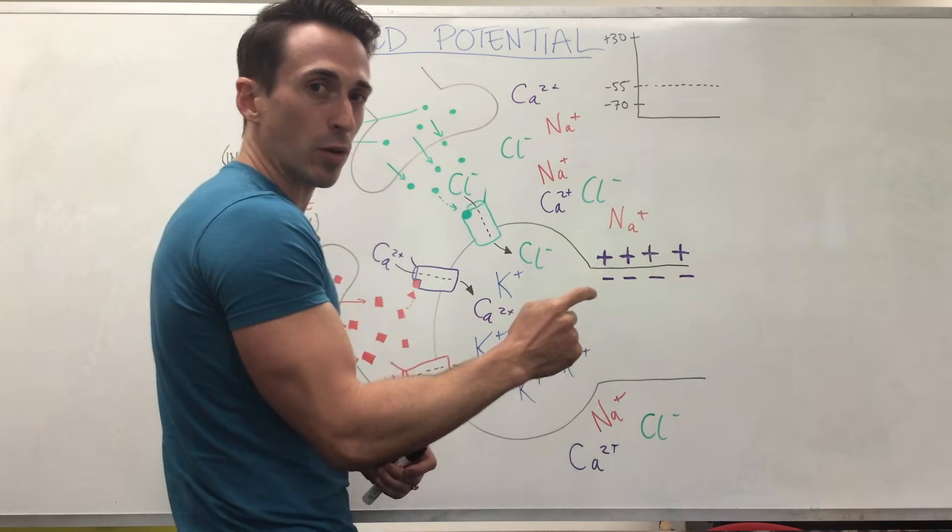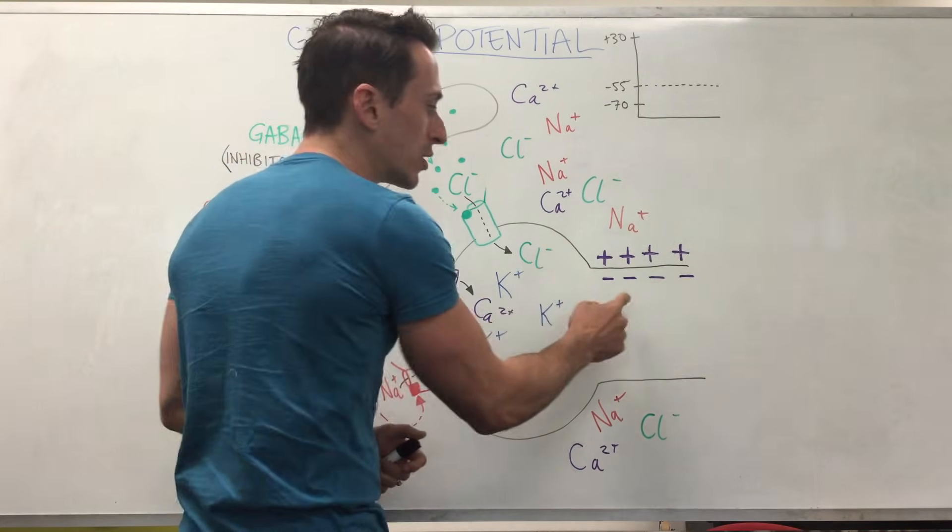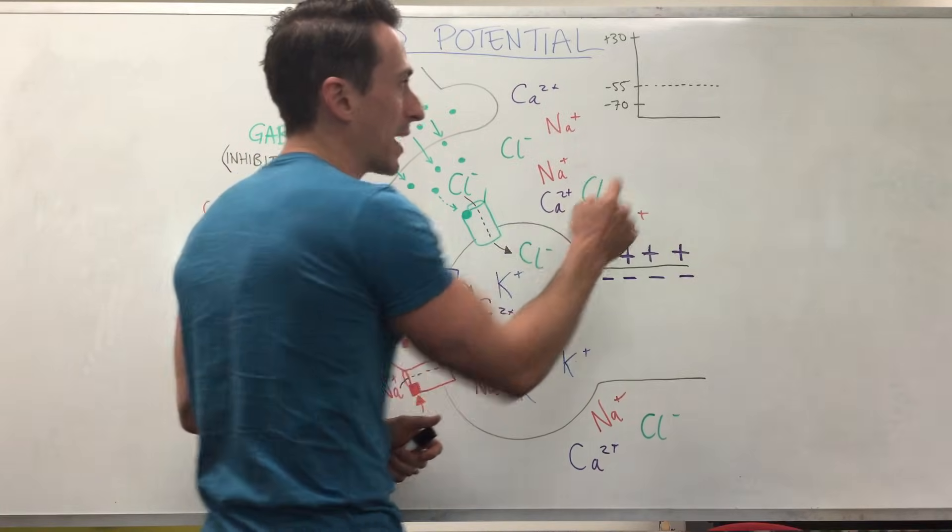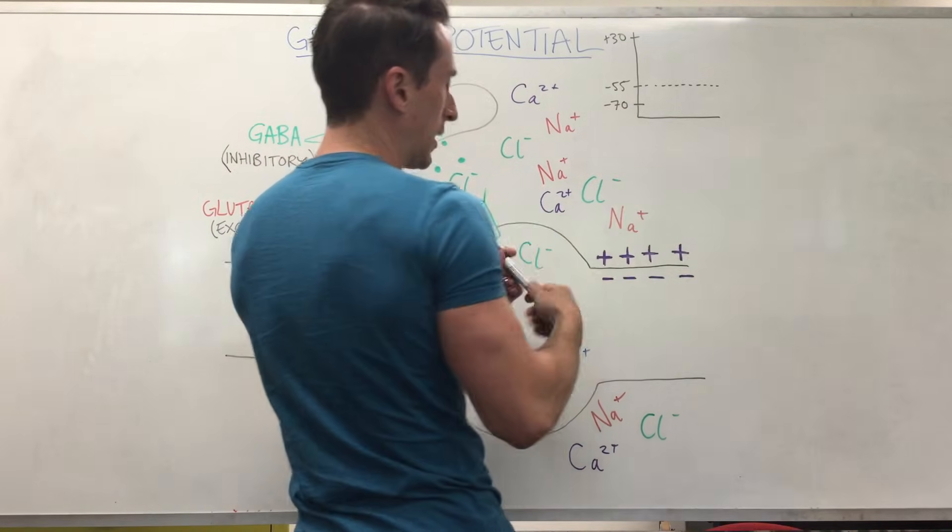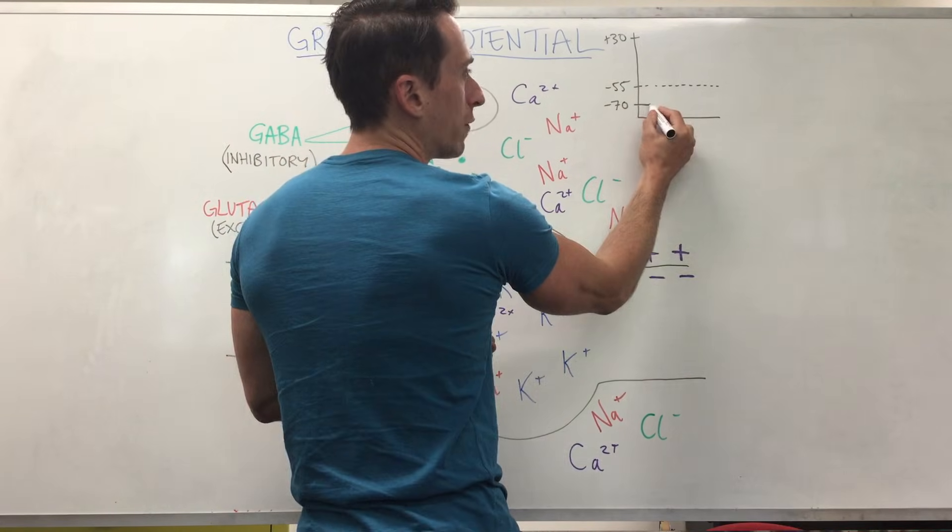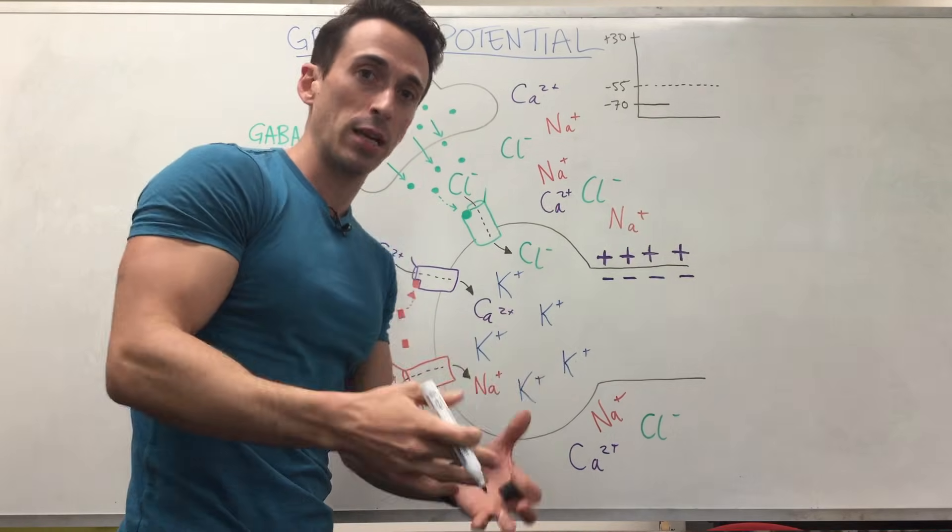So inside is negative 70 millivolts compared to outside, so it's sitting right here. This is what's happening when the neuron is not firing off and it's resting. That's called the resting membrane potential.